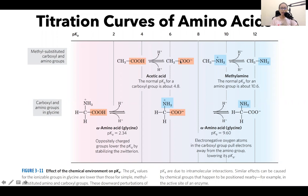For acetic acid, the pKa of this carboxyl group is around 4.8. But in the case of glycine, it's actually lower.